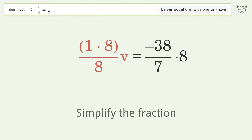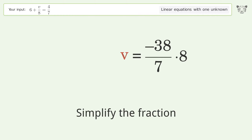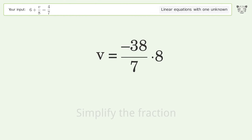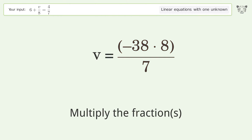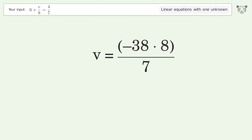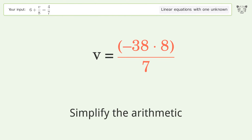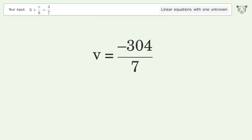Simplify the fraction. Multiply the fractions. Simplify the arithmetic. And so the final result is v equals negative 304 over 7.